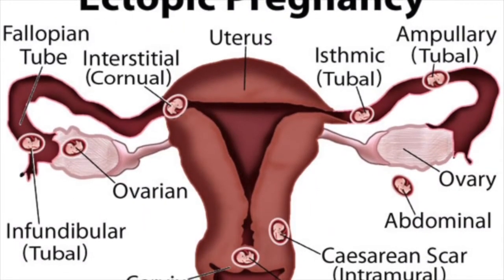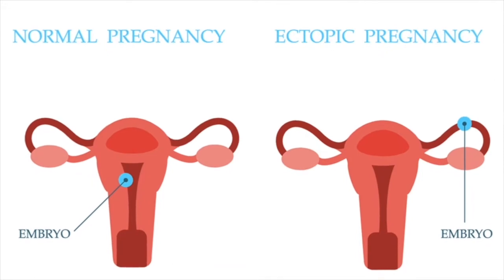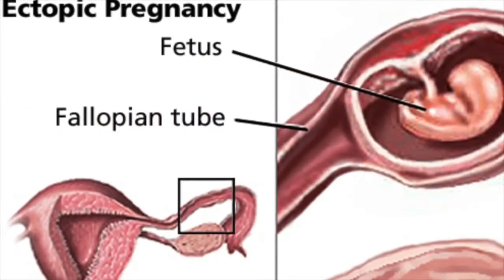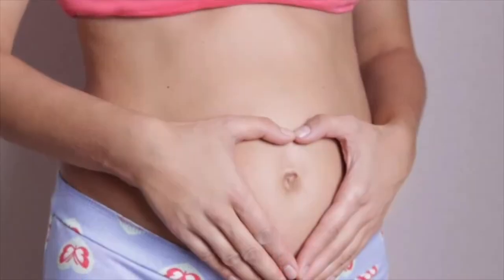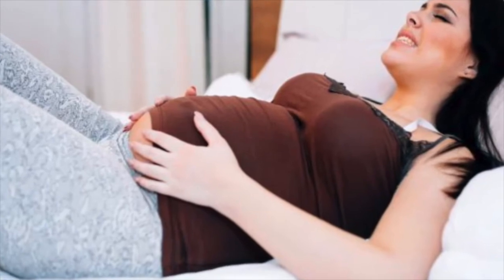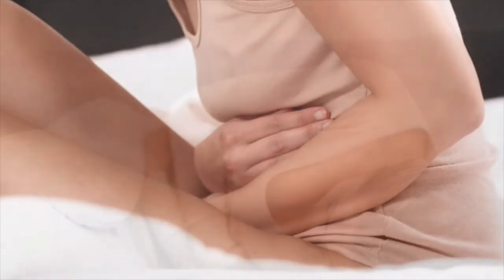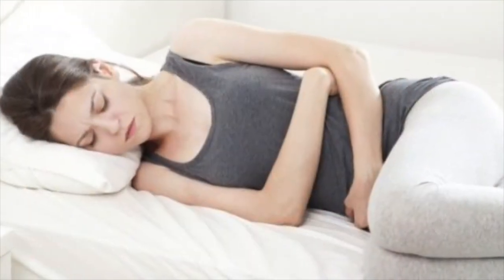How is an ectopic pregnancy diagnosed? Ectopic pregnancies are diagnosed by your physician, who will probably first perform a pelvic exam to locate pain, tenderness, or a mass in the abdomen. Your physician will also use an ultrasound to determine whether the uterus contains a developing fetus. The measurement of HCG levels is also important — an HCG level that is lower than expected is one reason to suspect an ectopic pregnancy.